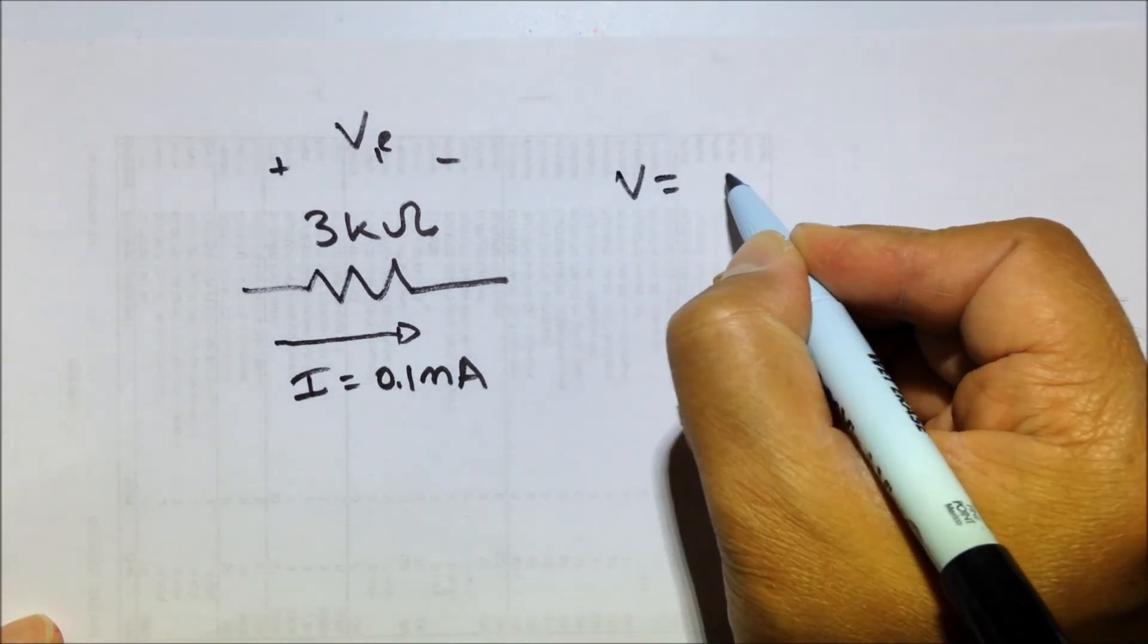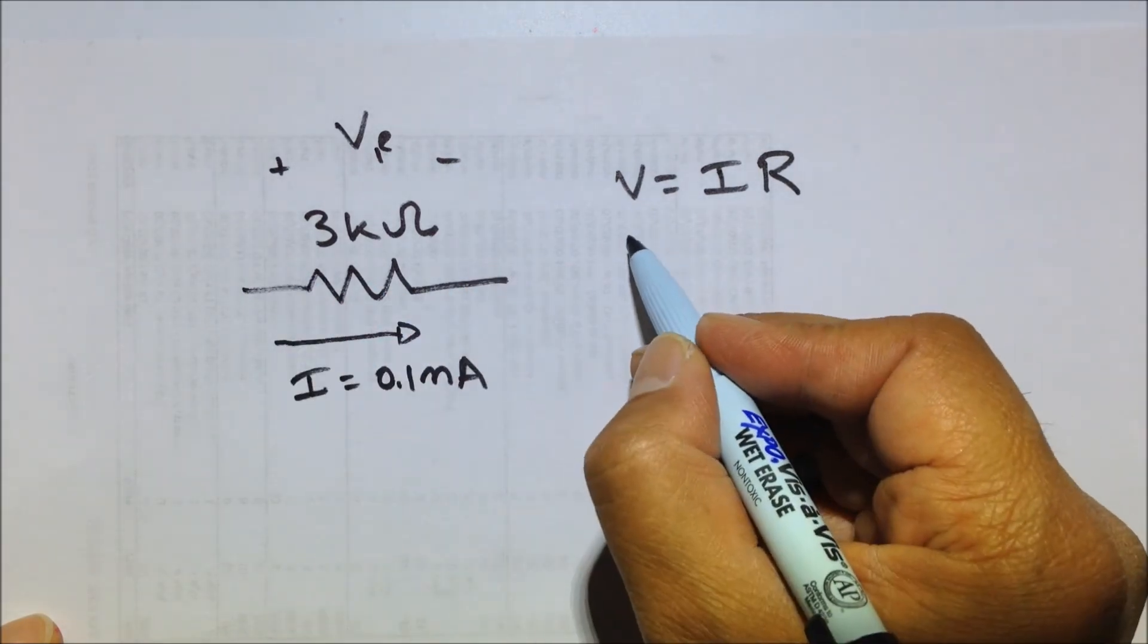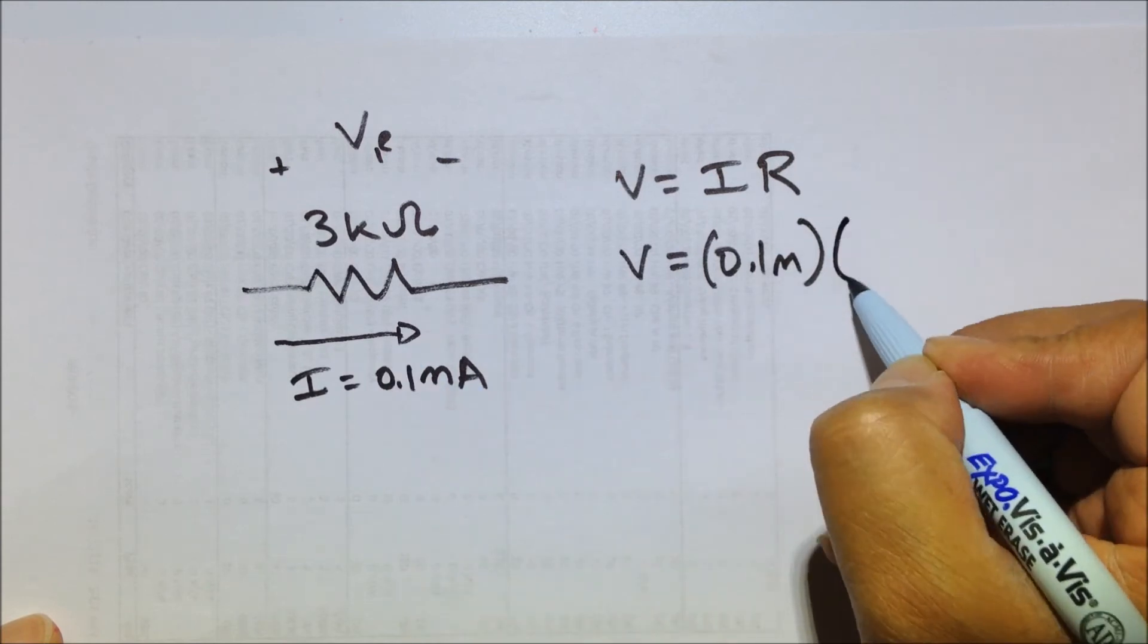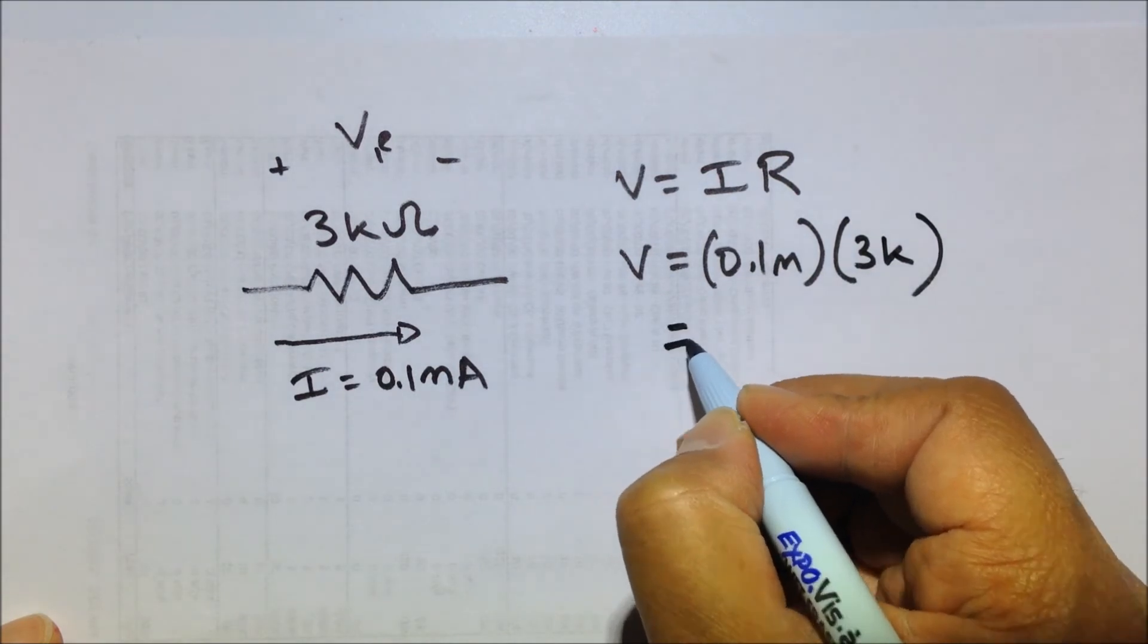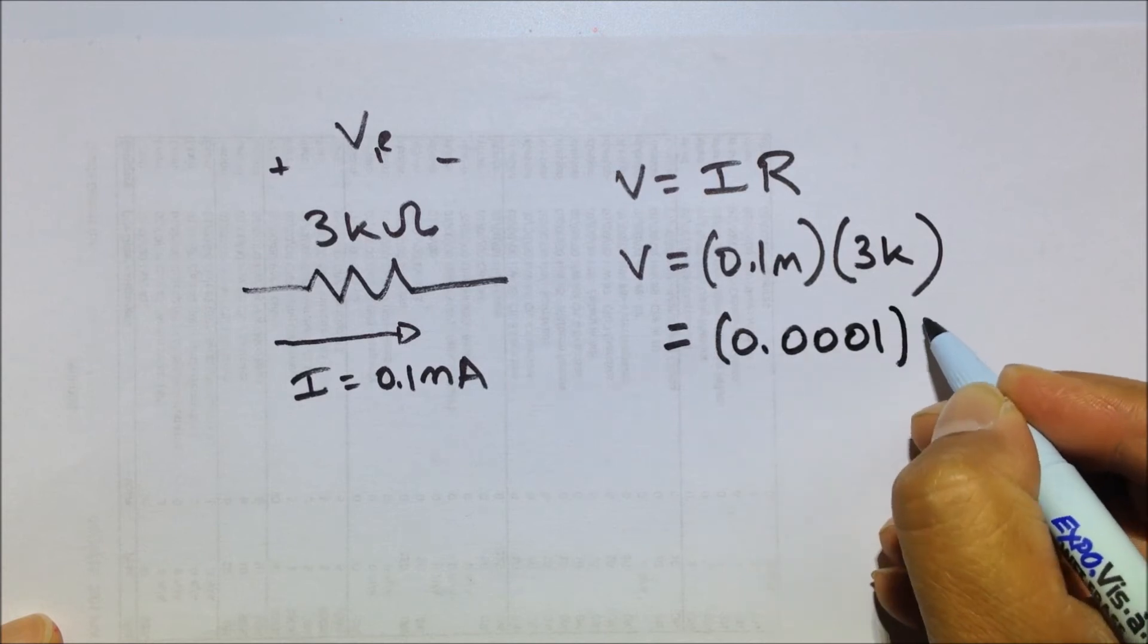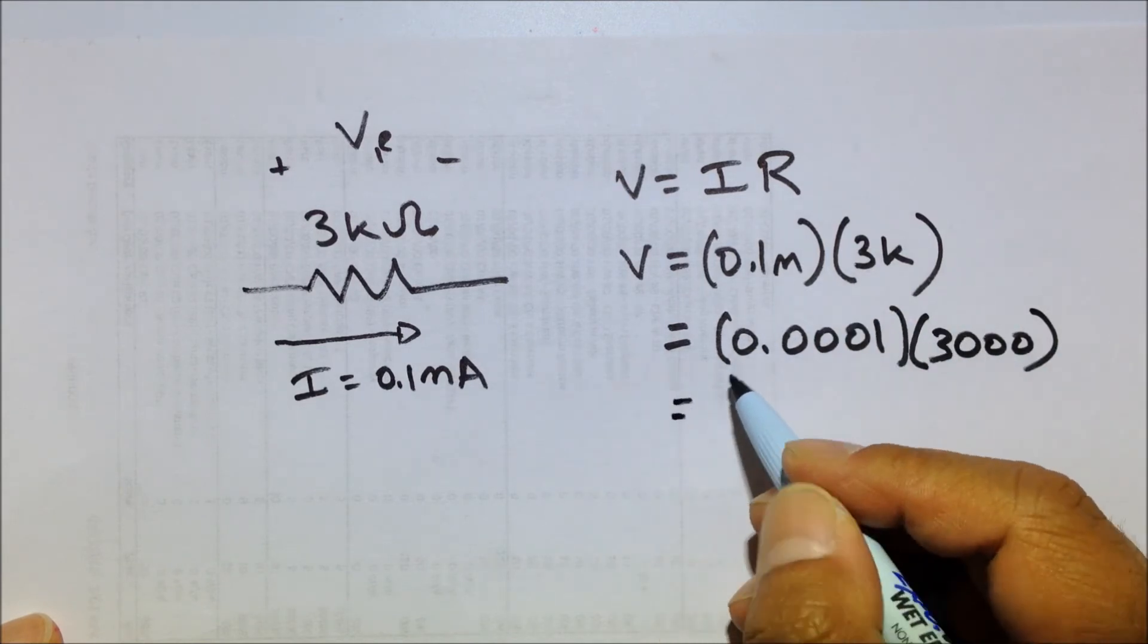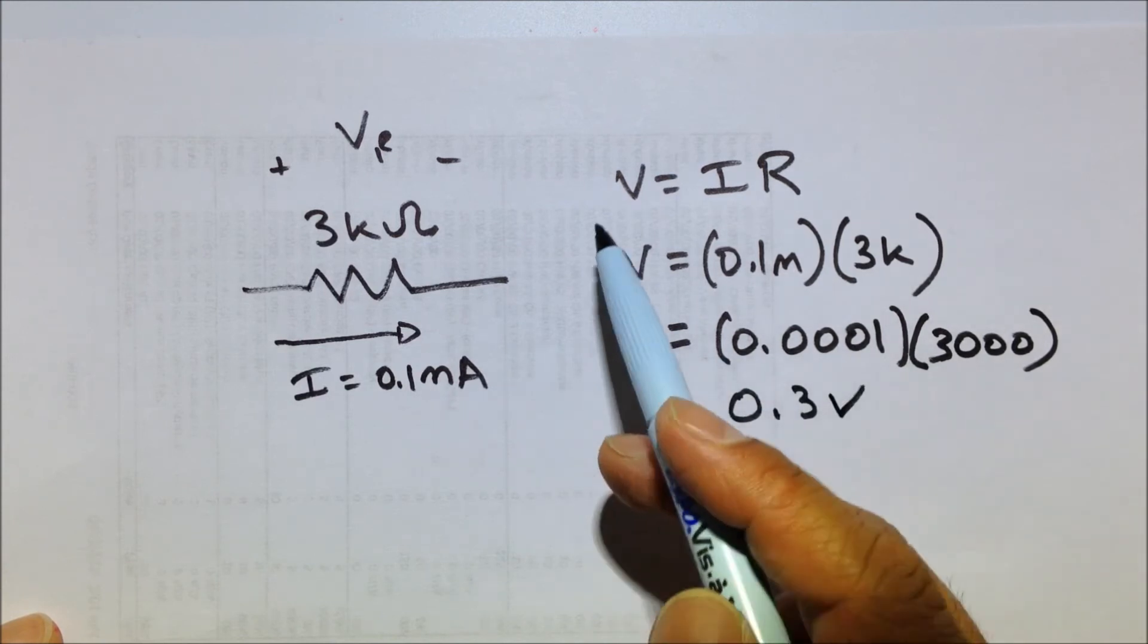So how do we know what that voltage is across that resistor? Well, let's look at our equation again, V equals IR. We know that the voltage drop across here equals I, which is the current, 0.1 milli, don't forget milli, times the resistance, which is 3K. So that's 0.0001 times 3,000. So in your calculator, just make sure you have the right amount of zeros. And this gives you 0.3 volts, just by using Ohm's Law.